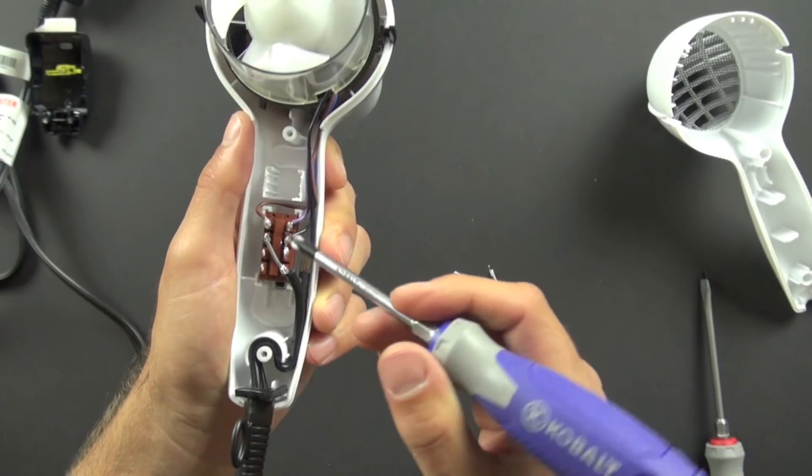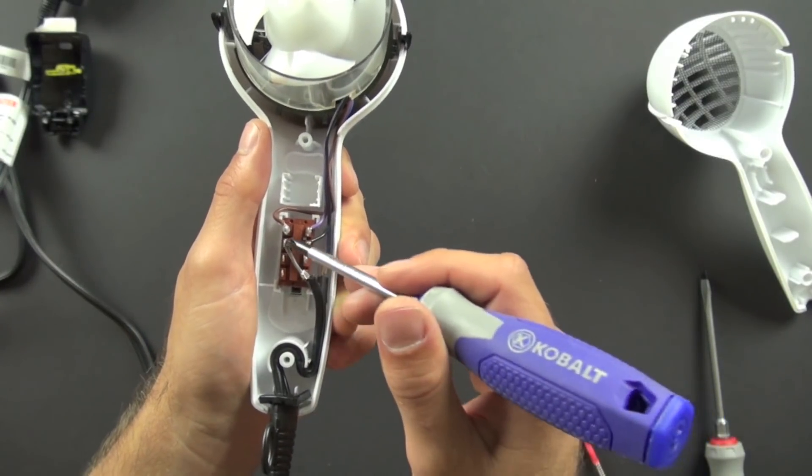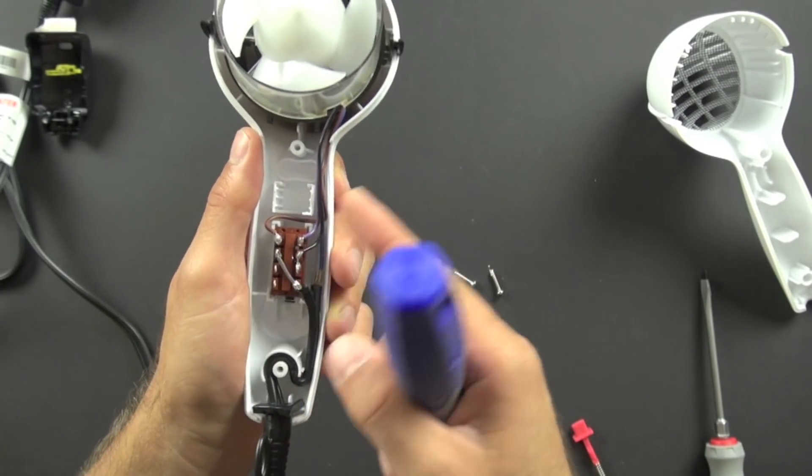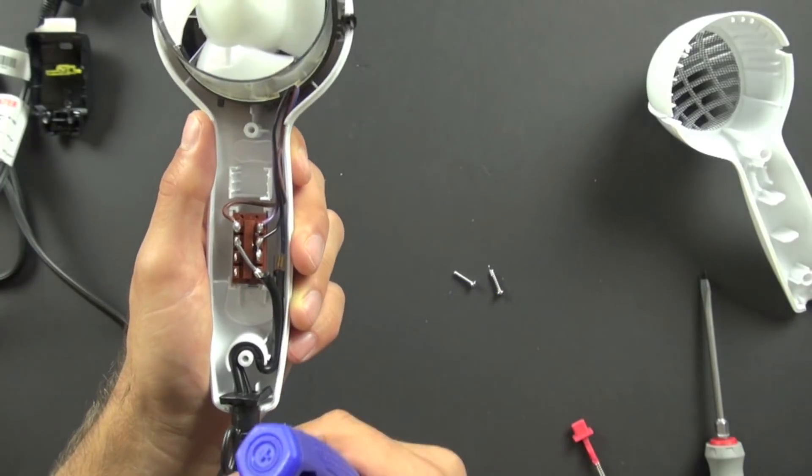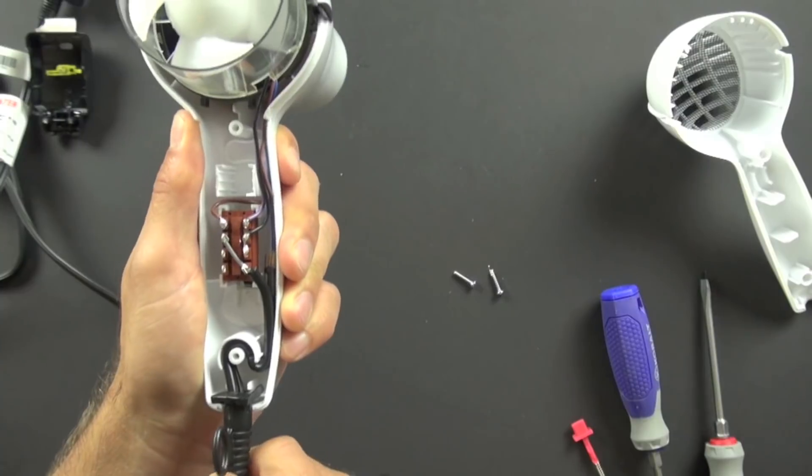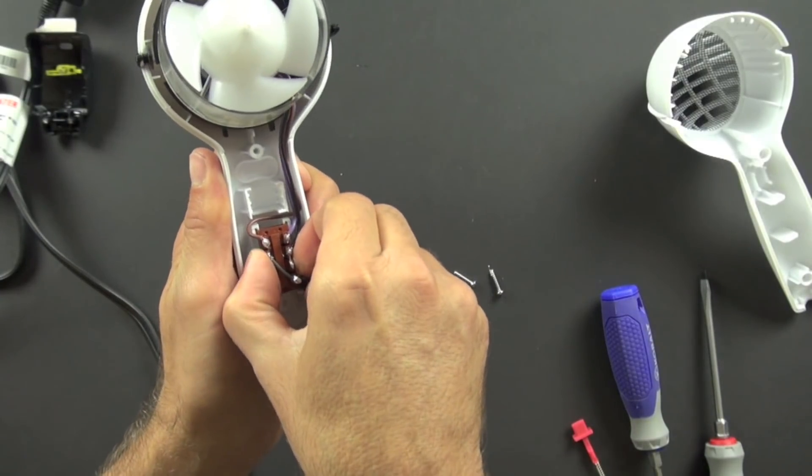The reason why they do that is so that you can't pull it out. You definitely don't want to have a condition where the wire can get pulled away from the switch and maybe have a free electrical contact in there that could touch things and short out and maybe just cause your hair dryer to stop working. So that protects you there. That's another safety thing.